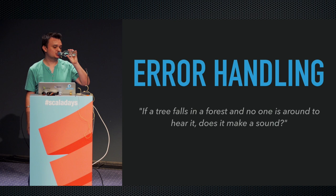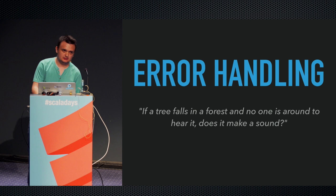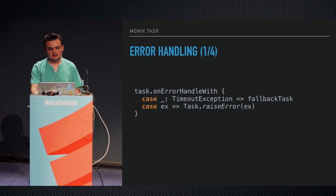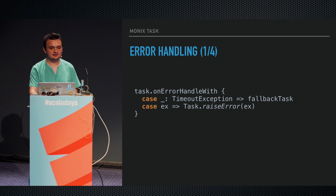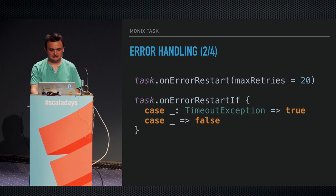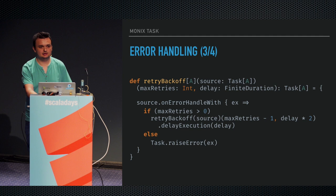Error handling. When doing asynchronous processing we need really good error handling, because if things blow up they're going to blow up on some thread somewhere. We have handleWith — you give it a function and depending on the type of exception you can try to fall back to another task. Task is a function that can be retried, so in case something happened we can choose to retry it repeatedly until some end condition. Because it's a function we can keep retrying it safely. We can also implement retry with back-off — when the producer you're communicating with has problems, it's a bad idea to keep retrying immediately.